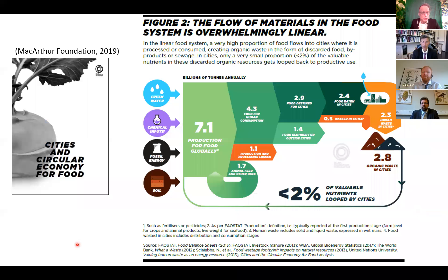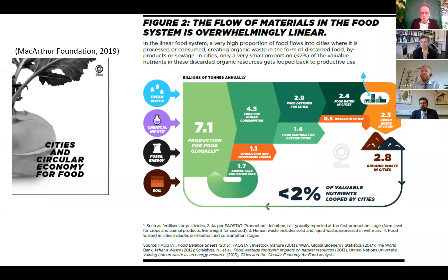The MacArthur Foundation published a report called 'Cities and Circular Economy for Food.' They show that from 7.1 billion tons of food produced globally, 2.4 billion tons is eaten in cities. Approximately a fifth of it is wasted in the city, diluted with water going into the toilet, resulting in 2.8 billion tons of organic waste produced in the city — of which less than 2% is looped back by the city. This is a linear process.